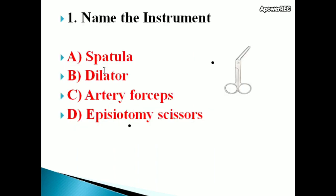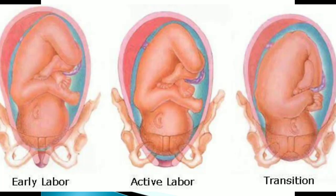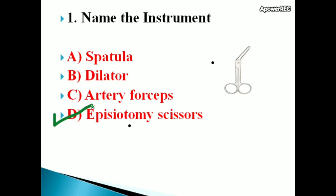First question: name the instrument. Options: spatula, dilator, artery forceps, episiotomy scissors. Correct answer is episiotomy scissors. Episiotomy, also known as perineotomy, is a surgical incision of the perineum, usually performed during the second stage of labor to quickly enlarge the passage for easy delivery. Episiotomy is usually done after crowning — crowning means visibility of the head. The perineum is the part between the anal and vaginal opening.